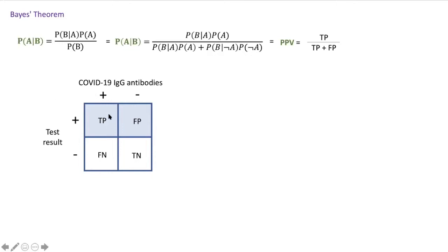So true positives are people who have the antibodies and the test labels as being positive for the antibodies, and then people who have the antibodies but the test incorrectly labels them as not having the antibodies are false negatives.